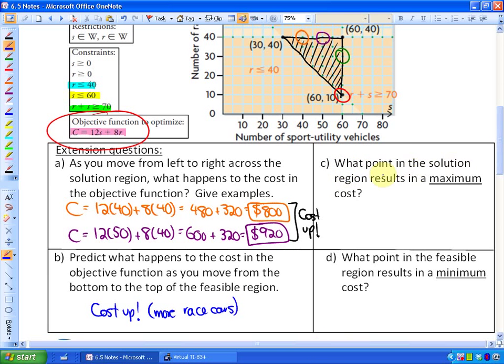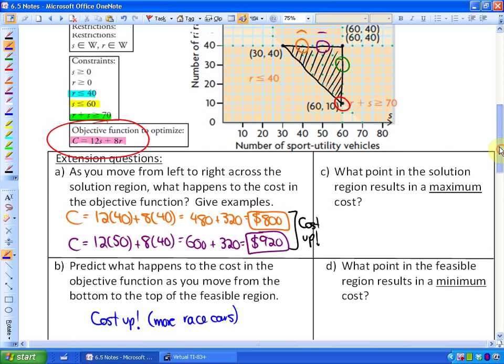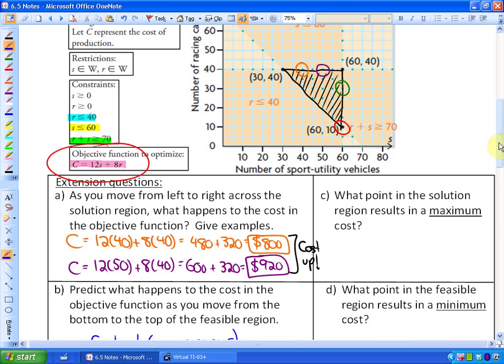Question C, what point in the solution region results in a maximum cost? Well, again, I would say predictably the maximum cost would be the most SUVs and race cars possible, which I believe is this point right here, 60 and 40. That's going to be your maximum cost. And you could find out what that is. So the point would be 60, 40. And the cost would be 12 times 60 plus $8 for every race car. And that's times 40. And that would be 720 plus 320. And that results in a cost of $1,020. So that would be the cost.